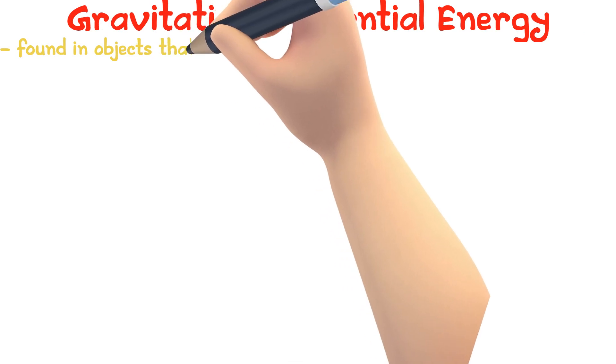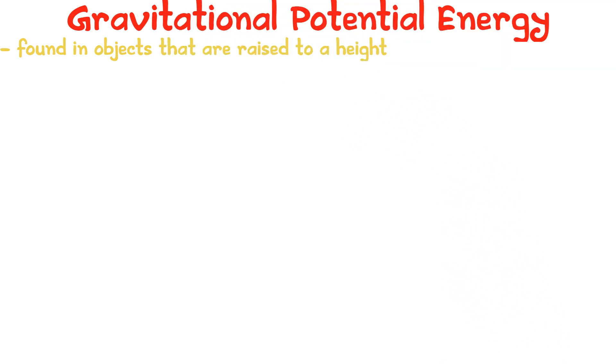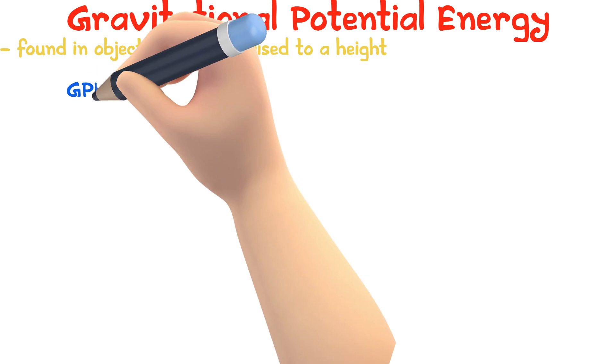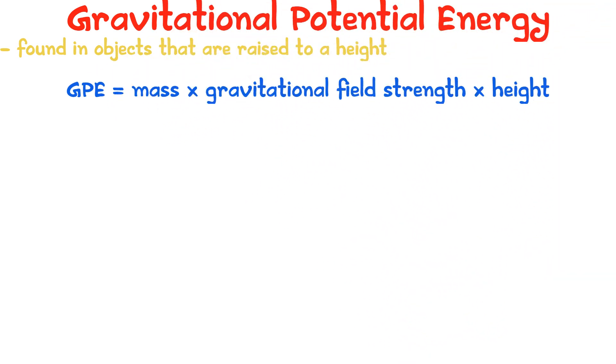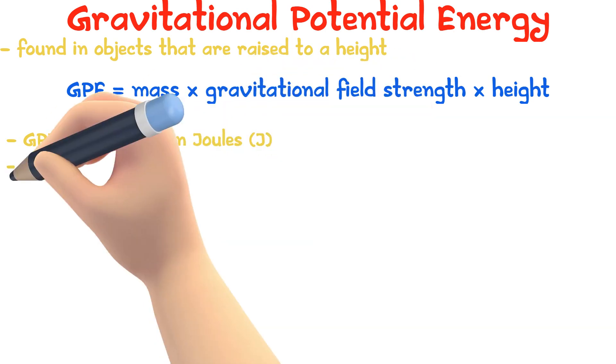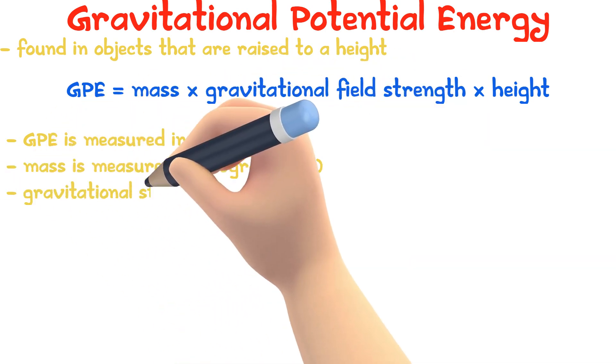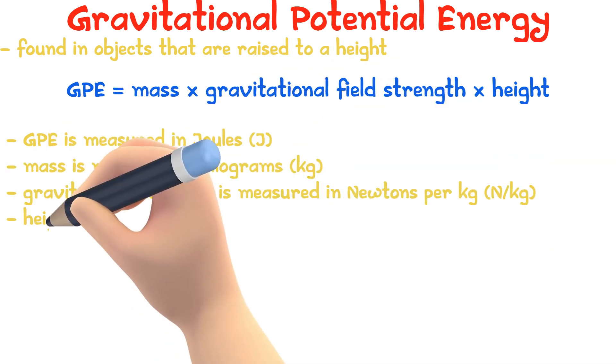Gravitational potential energy is found in objects that are raised to a height. GPE can be found using the equation GPE equals mass times gravitational field strength times height. GPE is measured in joules, mass in kilograms, field strength in newtons per kilogram, and height in meters.